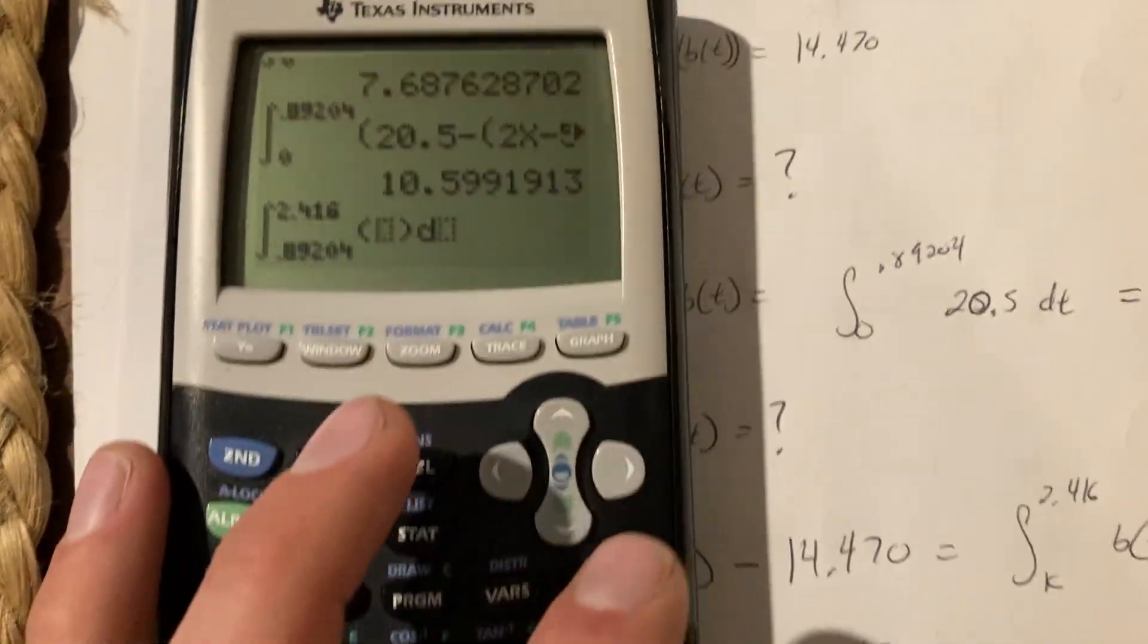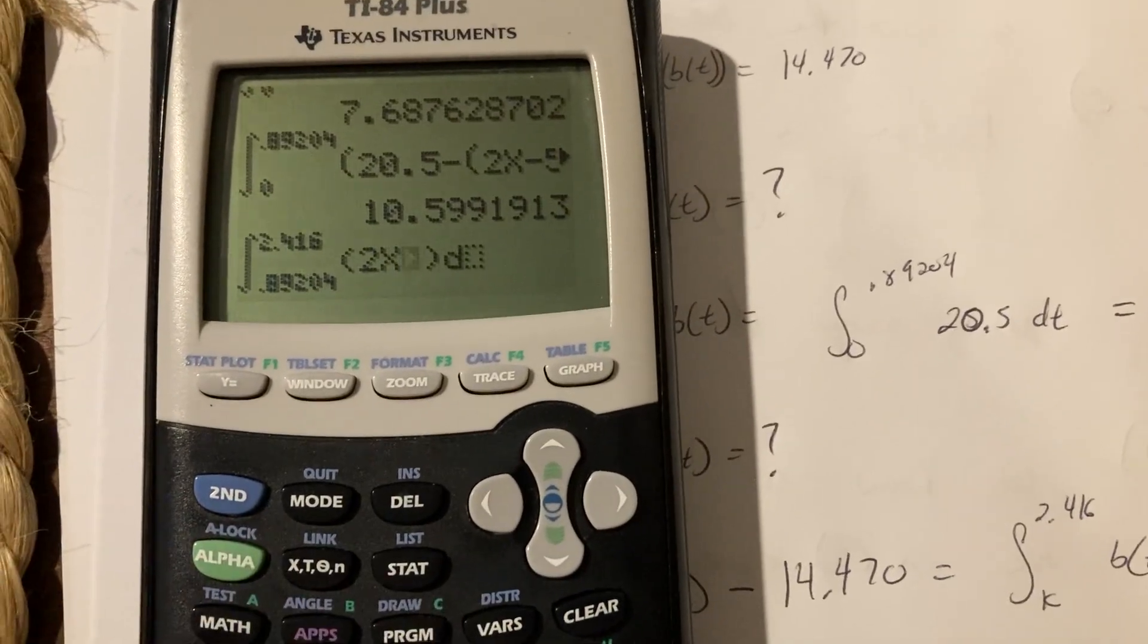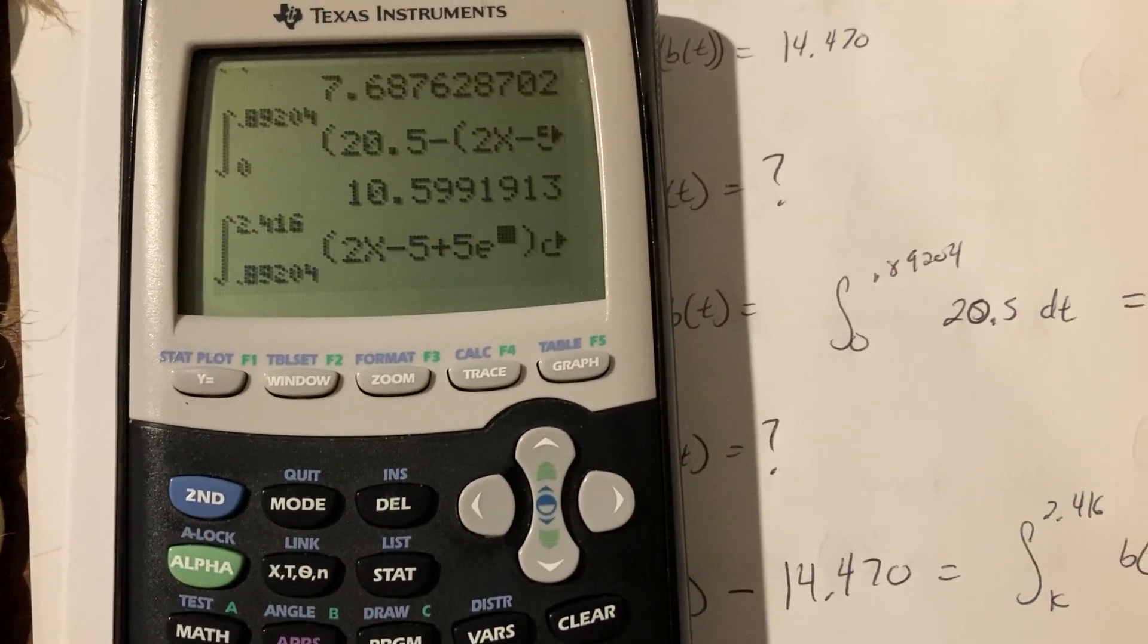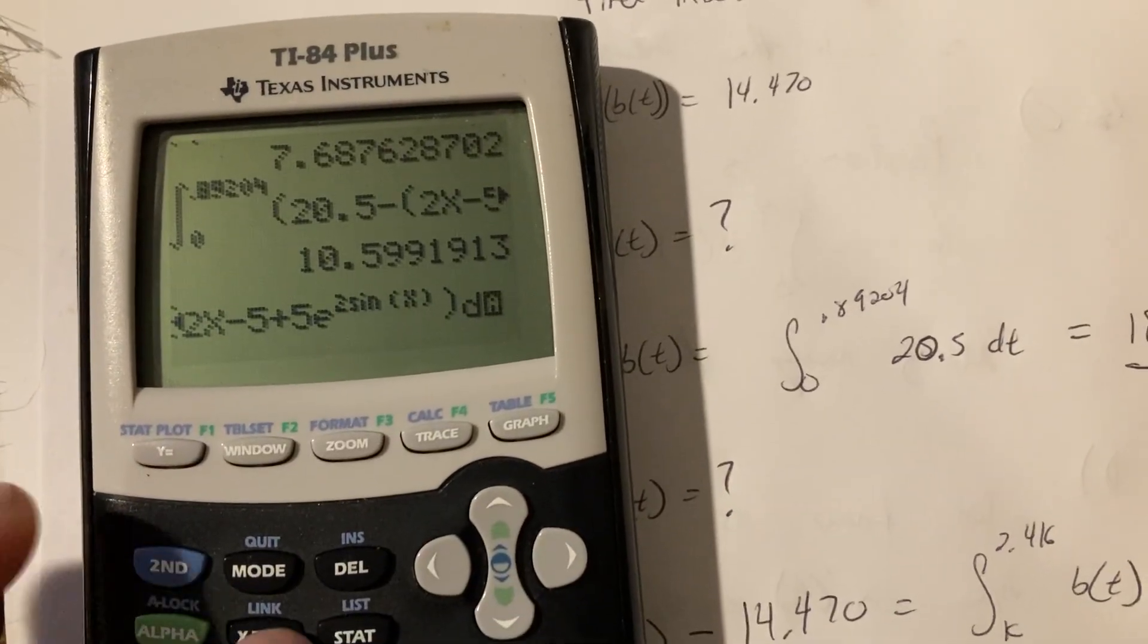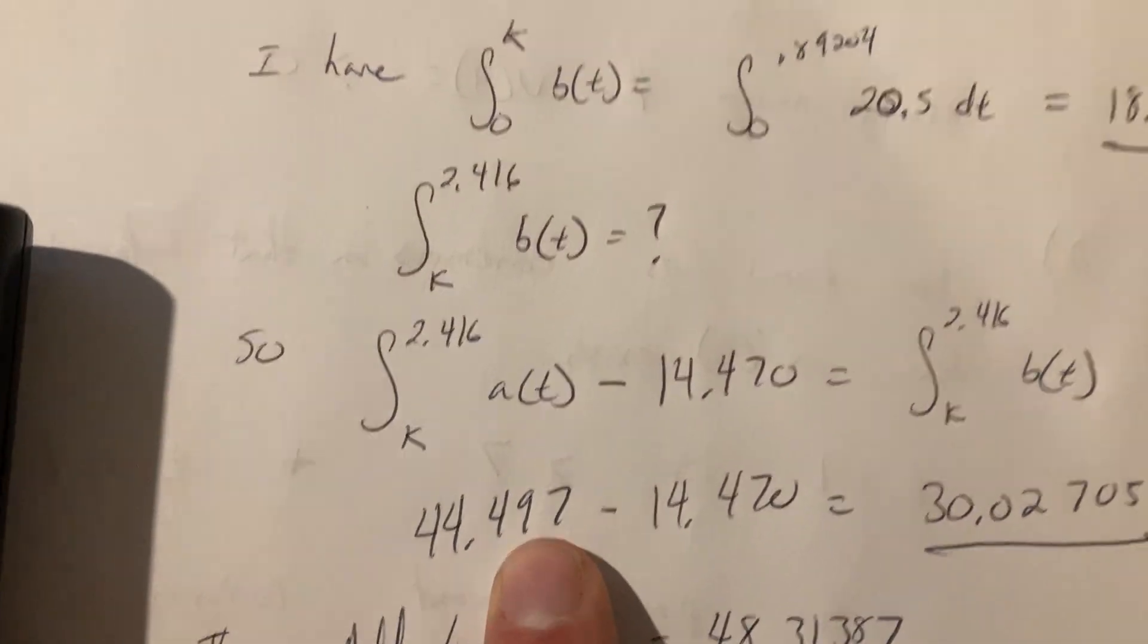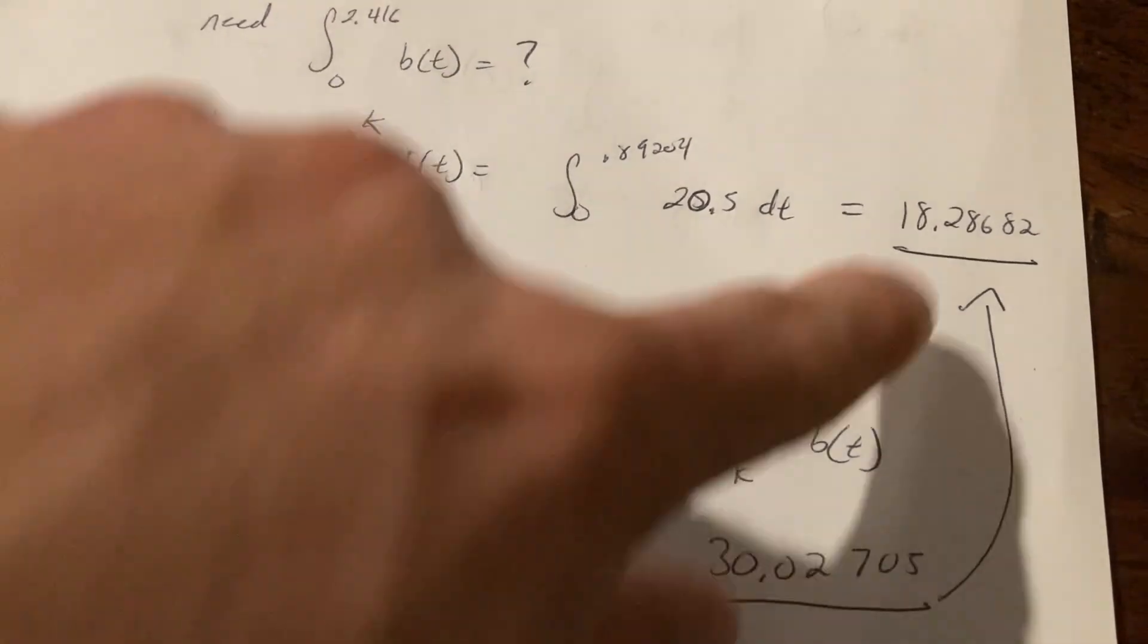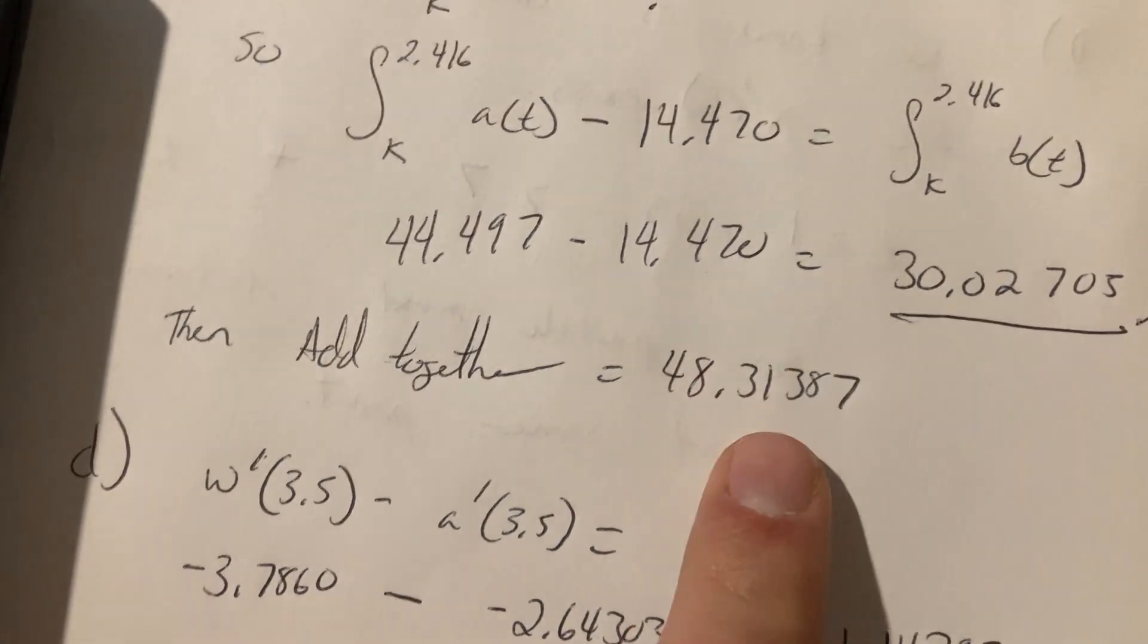of my equation, which my equation is 2x minus 5 plus 5 e to the 2 sine of x, those parentheses of x. So this guy is 44.49 minus that 14 is 30.02. Okay, that's that B, so now I just need to add this part of B to this part of B, 18.28 to 30.02, and I get 48.31.